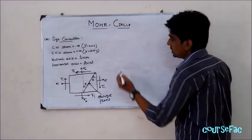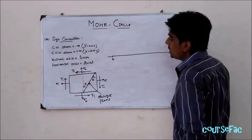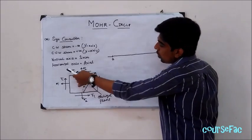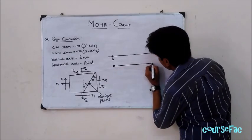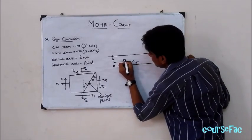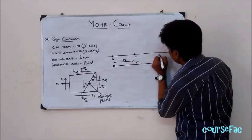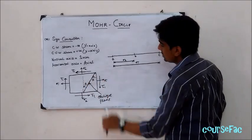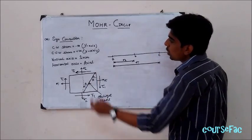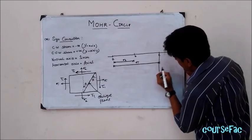I will now draw Mohr Circle. Here I have taken a central line — let's call it point A. Let's suppose sigma 1 is greater in magnitude than sigma 2. Since axial stress is always on the horizontal axis, I have taken sigma 1 longer. Let points B and C represent the ends. We will now plot the shear stresses. Along sigma 1, shear acts clockwise, so we take negative y-axis. This is tau 1, representing the magnitude of shear stress.